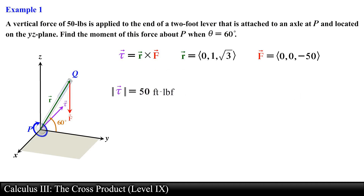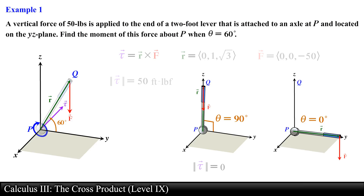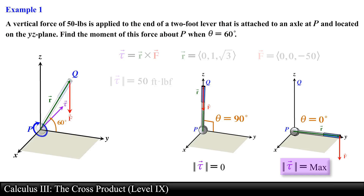Note that the moment is dependent on the angle formed by the lever and the positive y-axis. When theta equals pi over 2 and the force stays constant, the moment equals 0 since the force will be pointing in the same direction as the position vector. The moment is greatest when the angle is equal to 0 degrees, since in that configuration the position vector and force vector will be orthogonal to one another.